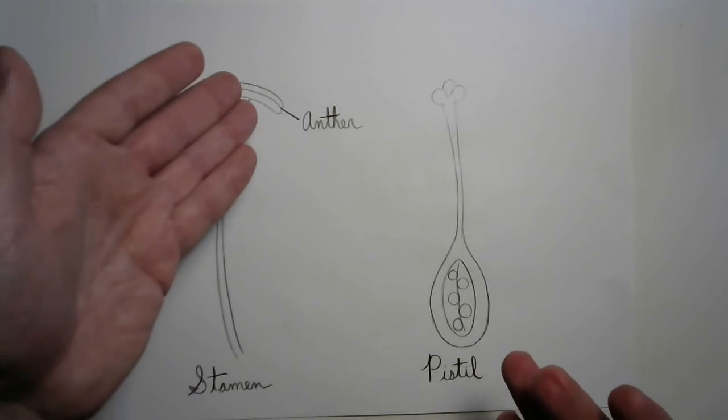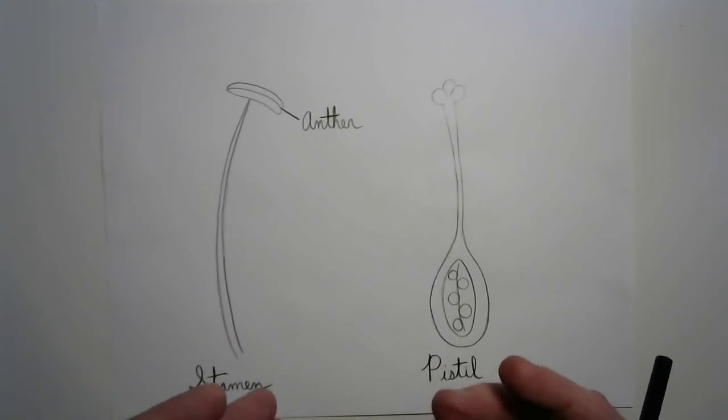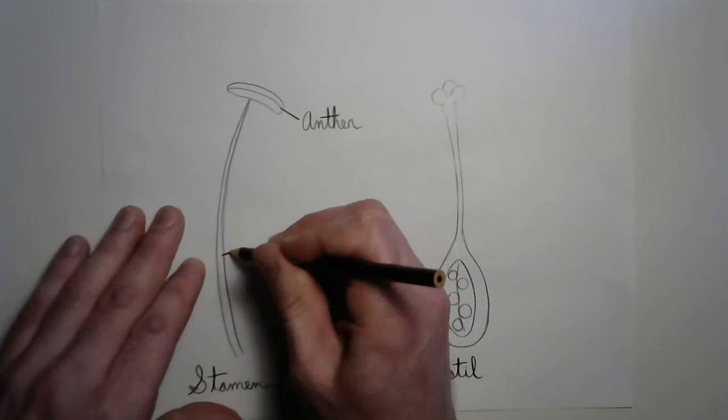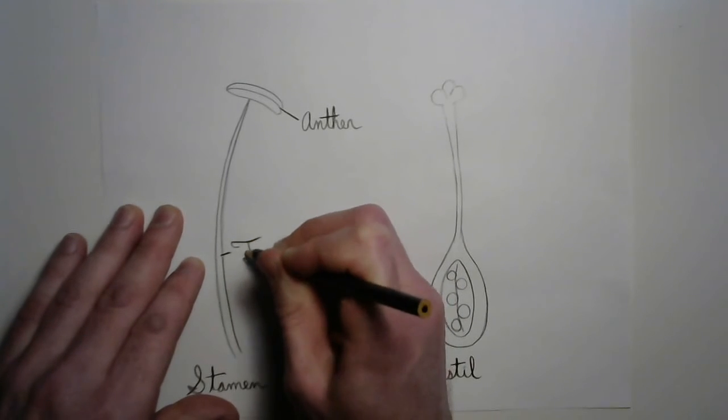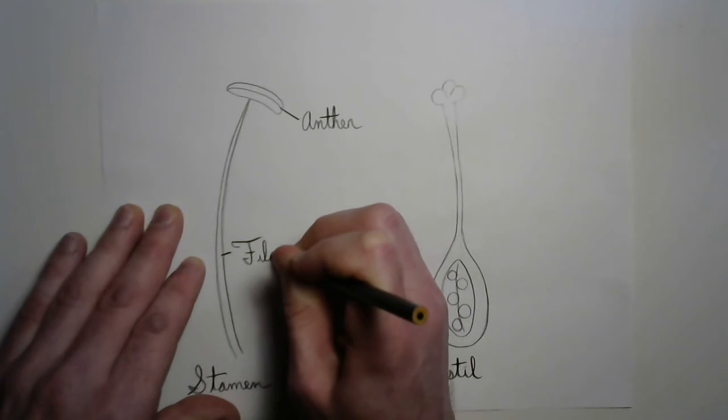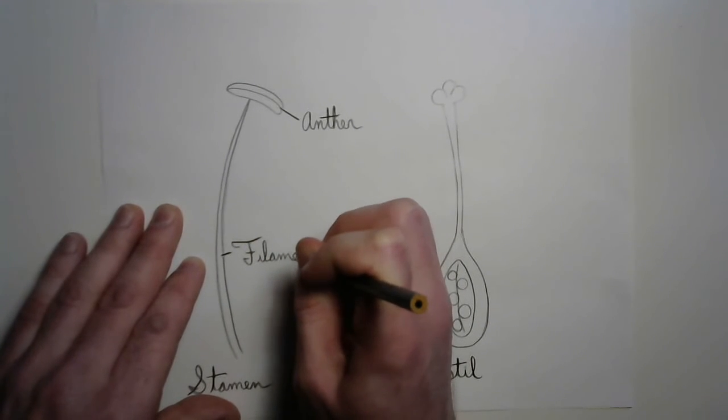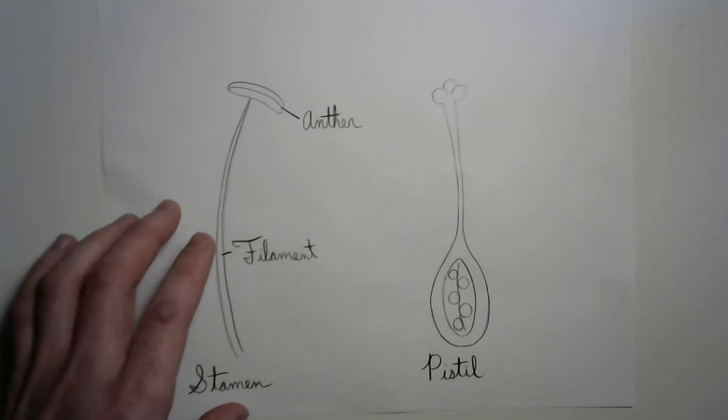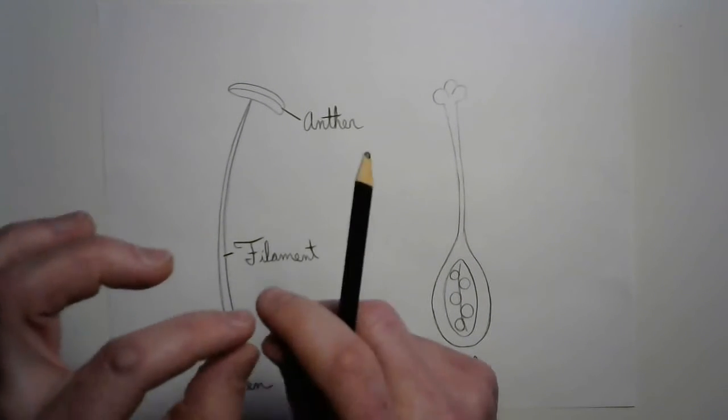And the anther is on top of this very long, sort of almost like a pole, right? It's called the filament. And filament comes from the Latin word film, which means a thread.